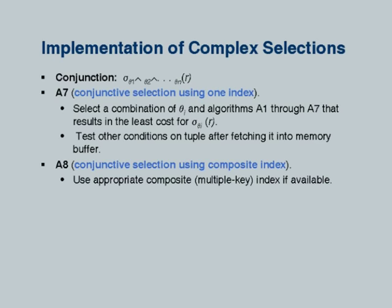Coming back, this was an example of why an optimizer can do a good job by looking into details. Then there are more kinds of selections to deal with — for example, if a selection has an AND of multiple conditions. I am going to skip those for now because we do not have too much time, but you can read about them in the book.